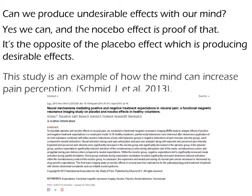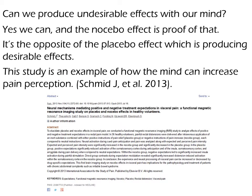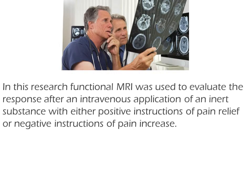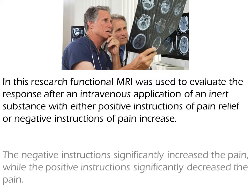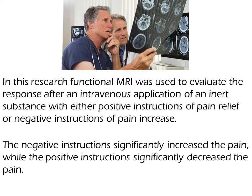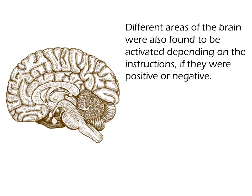This study is an example of how the mind can increase pain perception. In this research, functional MRI was used to evaluate the response after an intravenous application of an inert substance, with either positive instructions of pain relief, or negative instructions of pain increase. The negative instructions significantly increased the pain, while the positive instructions significantly decreased the pain. Different areas of the brain were also found to be activated depending on whether the instructions were positive or negative.